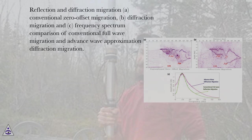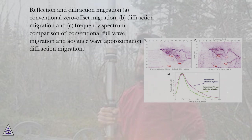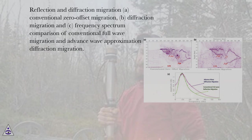Reflection and diffraction migration results: A — conventional zero-offset migration; B — diffraction migration; C — frequency spectrum comparison of conventional full-wave migration and advanced-wave approximation diffraction migration.